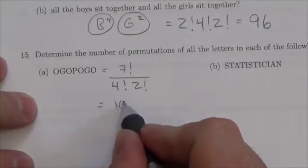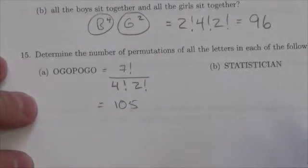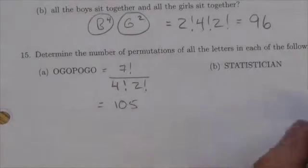And so altogether, putting that in your calculator, we get 105 different permutations, different unique permutations.